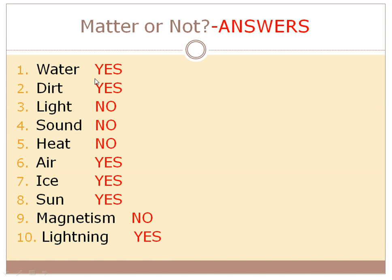Water and dirt — yes, those are pretty obvious. Light, sound, and heat are not matter; these are types of energy you cannot put on a balance. Air — hopefully you put yes. Some people say no because air doesn't have a lot of mass, but it does have some. When you blow up a balloon, air takes up space, so air is made of atoms and is matter. Gas is a state of matter. Ice — yes. The sun is a plasma, so yes. Magnetism is a type of energy, so no. Lightning itself is a plasma — yes, it is matter.